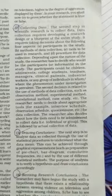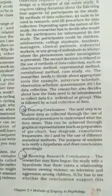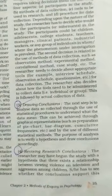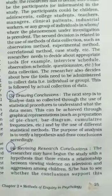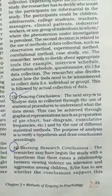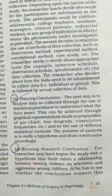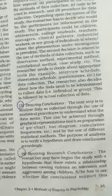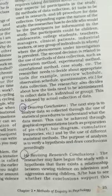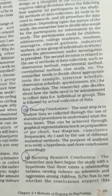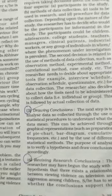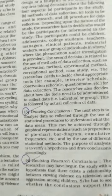This is done in order to know whether the hypothesis is true or false. Now, revising research conclusions: the researcher may have begun the study with the hypothesis that there exists a relation between violence on television and aggression among children. If the hypothesis is true, then further research is not done. But if the hypothesis is wrong, further research is again conducted and new data collection takes place. If the hypothesis tends to be false, then all the steps are repeated in a systematic manner once again.